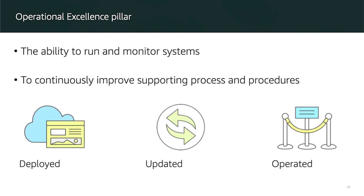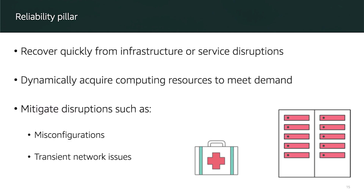In the reliability pillar, we want to recover quickly from infrastructure or service disruption and be able to dynamically acquire computing resources to meet demand. We should also have mitigation for disruptions such as misconfigurations and transient network issues.